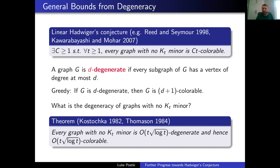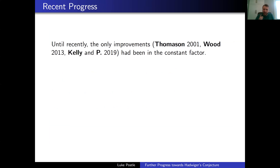That had been the state of the art for almost 40 years. There were some minor improvements: Thomason in 2001 found the right constant, Wood in 2013 subtracted a bit, and with my student Thom we improved the front constant by a 0.998 factor. But there had been really no movement in that t√(log t) bound, other than constant factors, and that's where it remained until last fall.